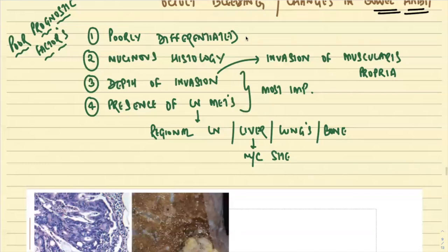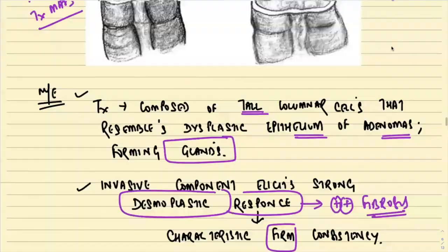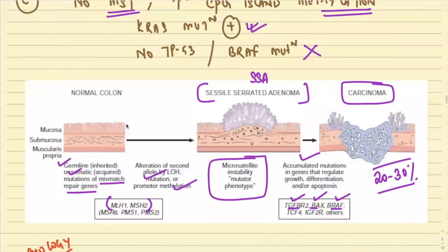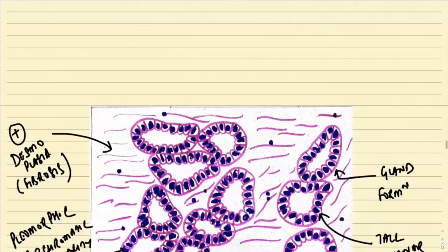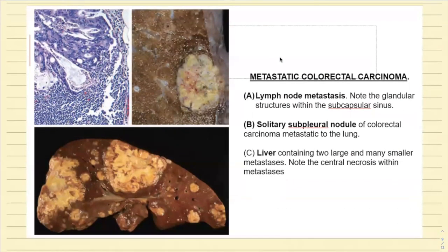Poor prognostic factors for colorectal carcinoma include poorly differentiated histology, mucinous histology, and depth of invasion — specifically invasion of the muscularis propria. As shown in the diagram, the wall layers are: mucosa, submucosa, and the muscle layer called muscularis propria.